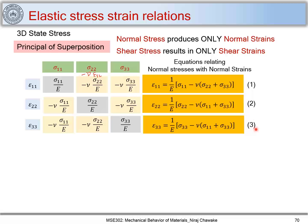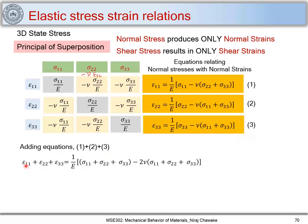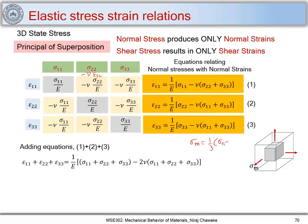If I add the three strain equations — labeling them 1, 2, 3 — I get: epsilon 1 1 plus epsilon 2 2 plus epsilon 3 3 equals 1 upon E times (sigma 1 1 plus sigma 2 2 plus sigma 3 3) minus 2 mu times (sigma 1 1 plus sigma 2 2 plus sigma 3 3). This term can be replaced using the mean stress, which we have seen when discussing the hydrostatic stress state. We defined sigma m as one-third of (sigma 1 1 plus sigma 2 2 plus sigma 3 3).